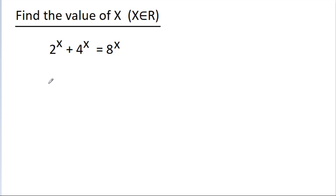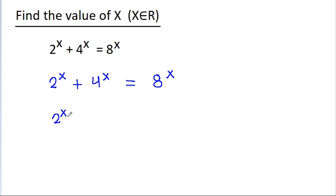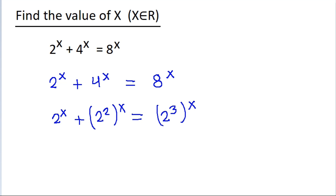So we have 2 to the power x minus 4 to the power x equals 8 to the power x. We can rewrite this as: 2 to the power x minus 4, where 4 equals 2 squared, to the power x, equals 8, where 8 equals 2 cubed, to the power x. We know that n to the power p to the power q is the same as n to the power pq.